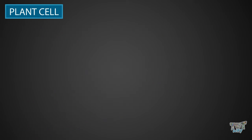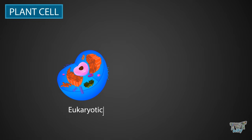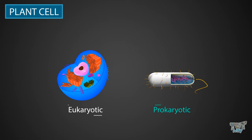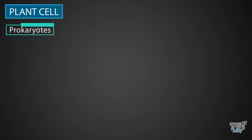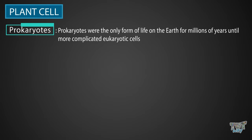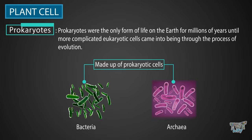All types of cells are either eukaryotic or prokaryotic. Prokaryotes were the only form of life on the earth — organisms made up of prokaryotic cells existed for millions of years until more complicated eukaryotic cells came into being through the process of evolution. So, millions of years ago, there were only prokaryotic cells, or prokaryotic organisms, on earth.